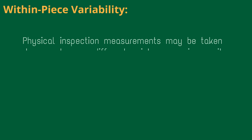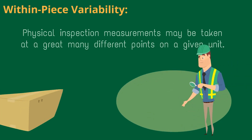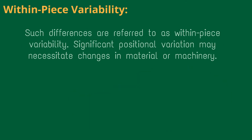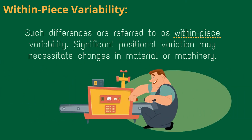Within Piece Variability: physical inspection measurements may be taken at a great many different points on a given unit. Such differences are referred to as Within Piece Variability. Significant positional variation may necessitate changes in material or machinery.